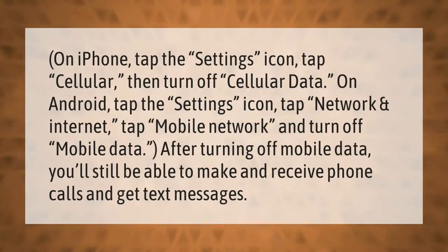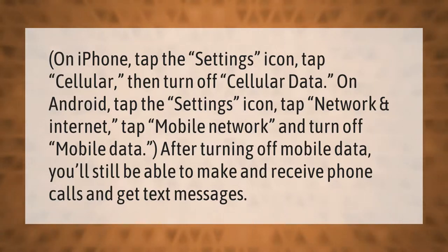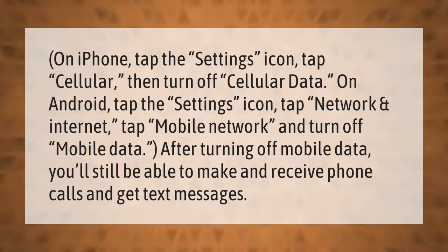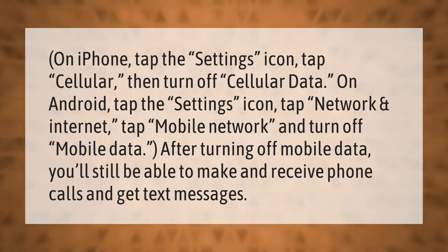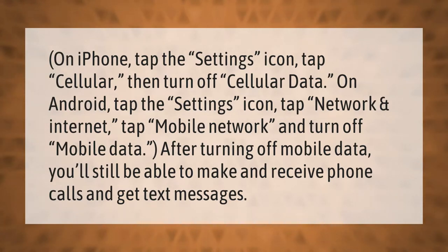On iPhone, tap the Settings icon, tap Cellular, then turn off Cellular Data. On Android, tap the Settings icon, tap Network and Internet, tap Mobile Network, and turn off Mobile Data. After turning off mobile data, you'll still be able to make and receive phone calls and get text messages.